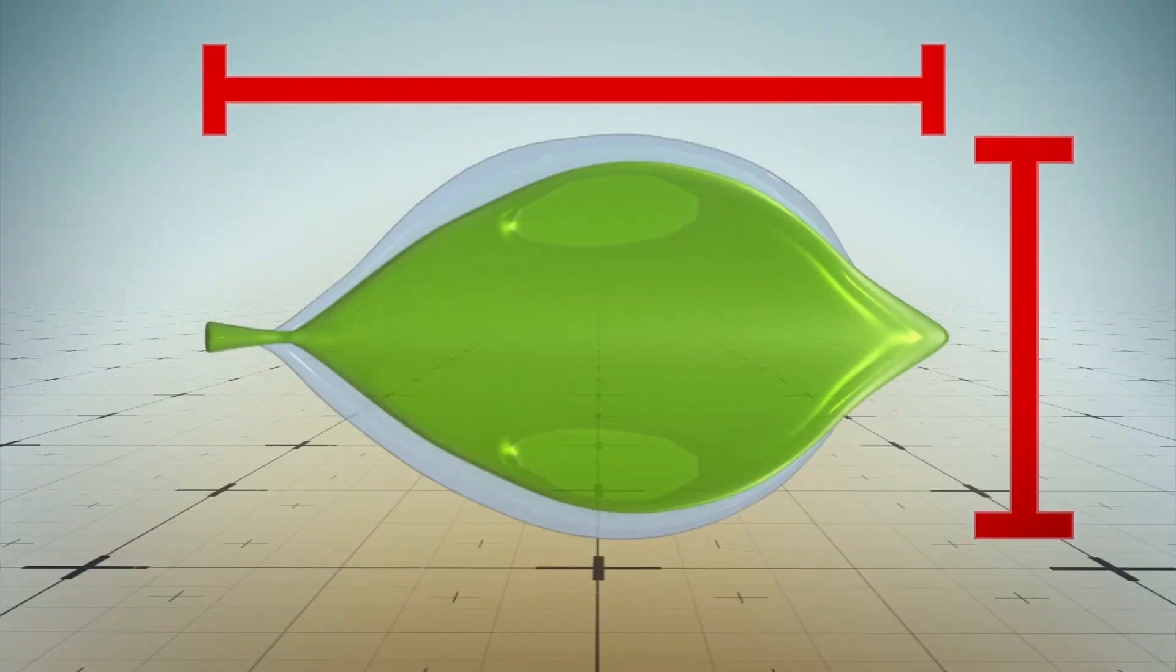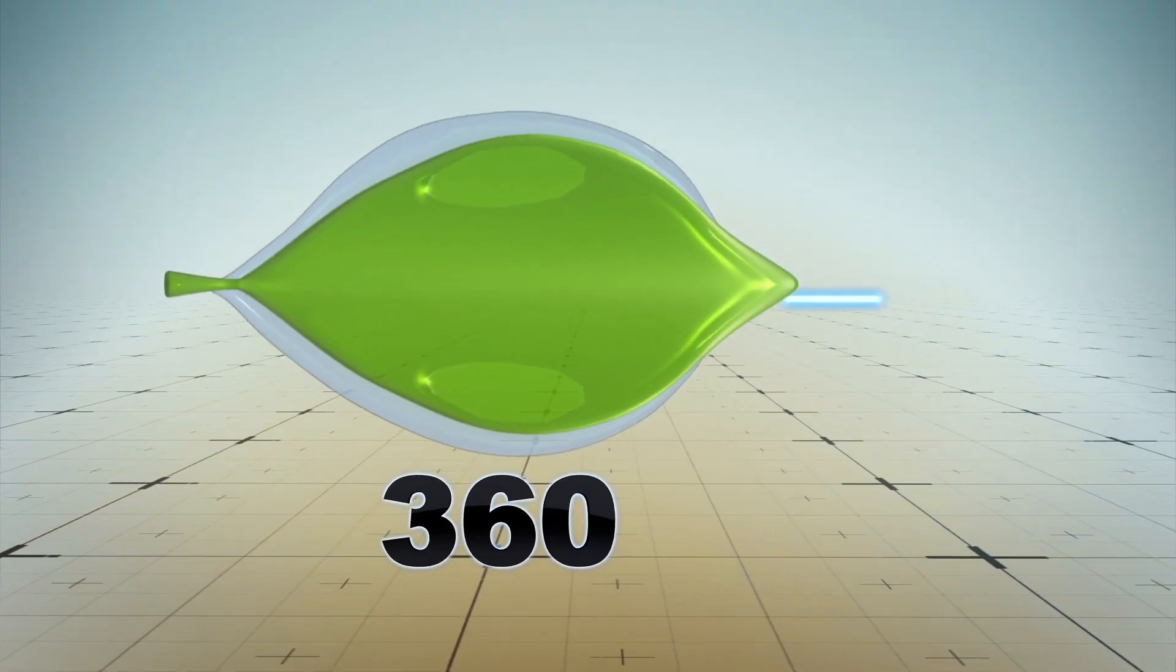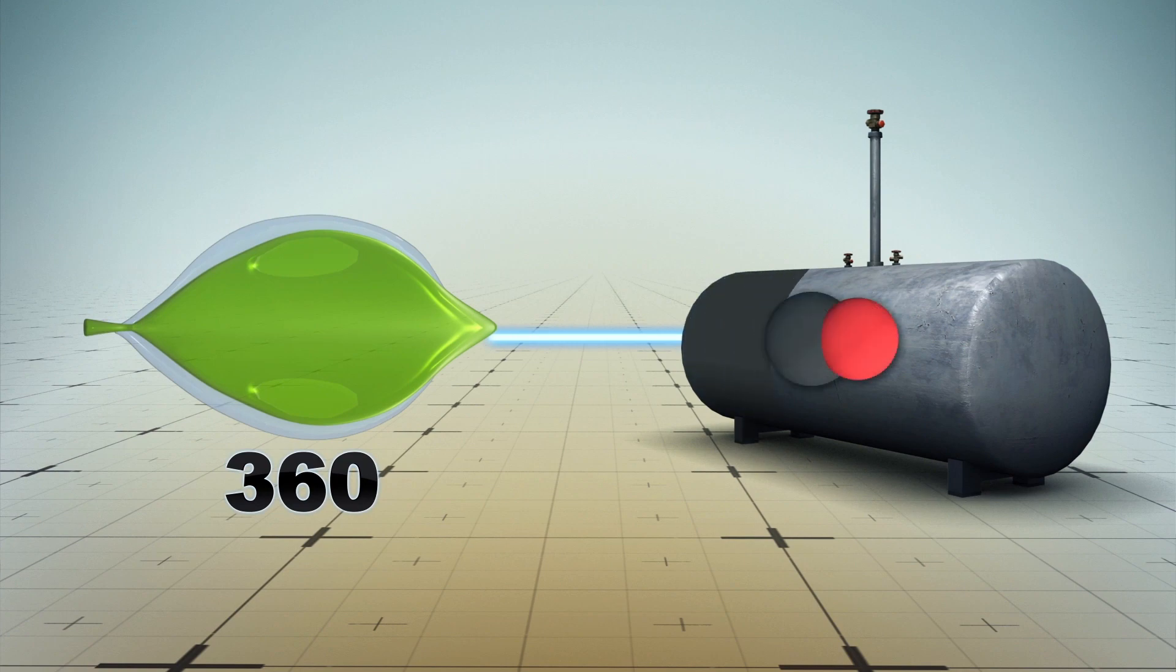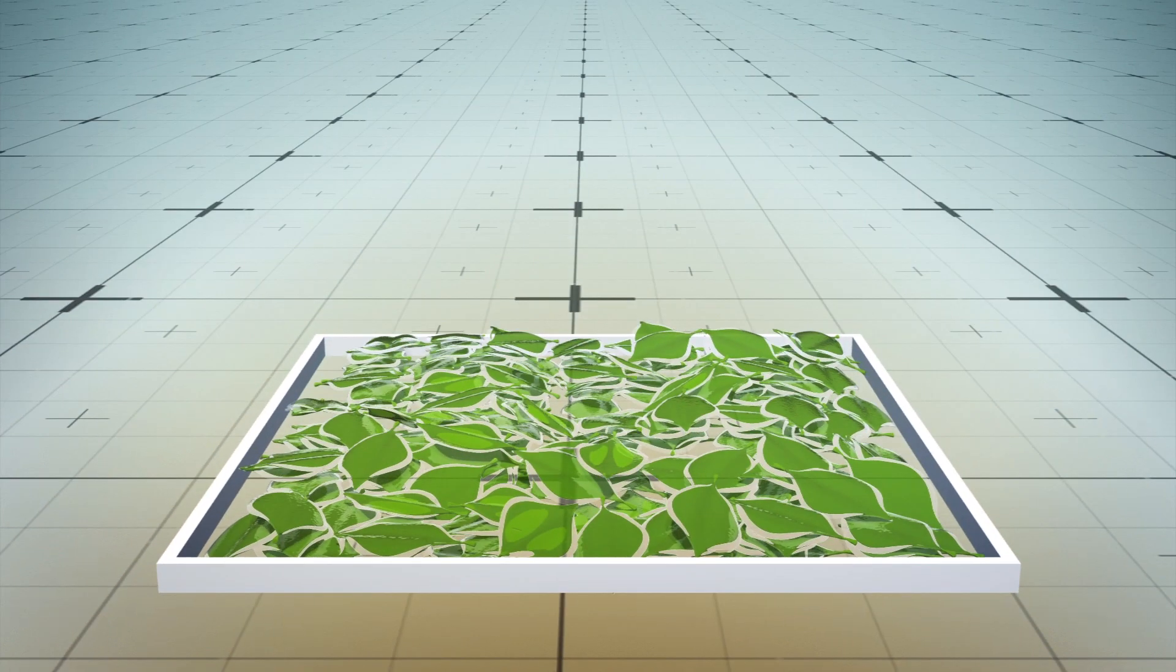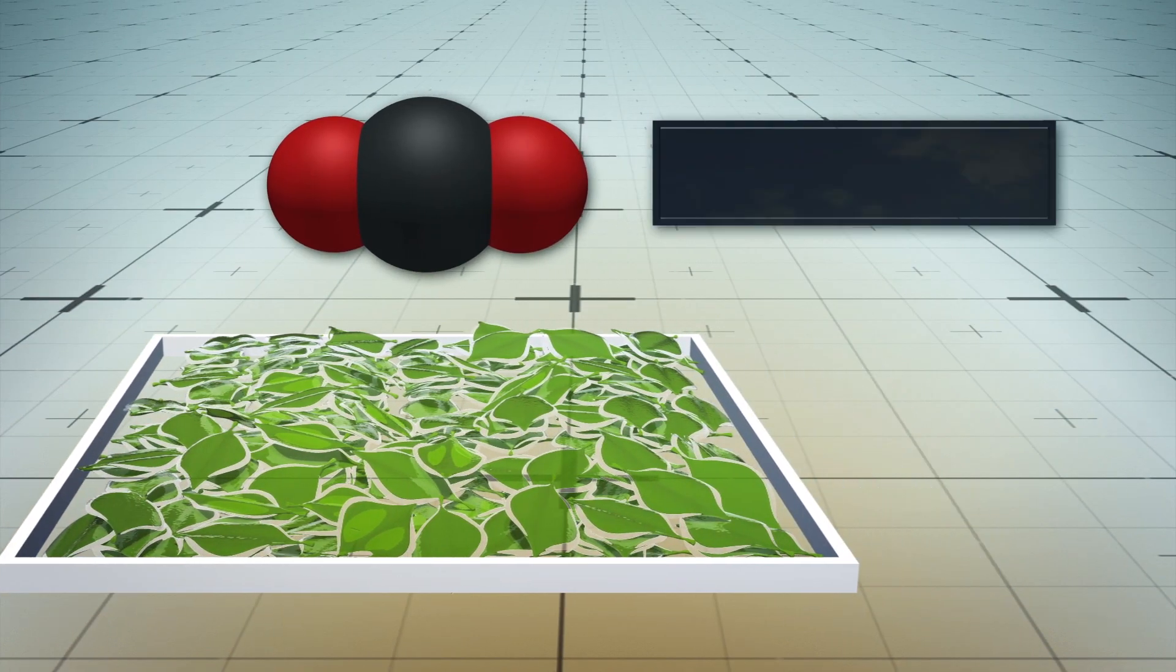The researchers calculate that 360 of the 1.7-meter-long and 0.2-meter-wide leaves could produce a half ton of carbon monoxide per day. The same number of leaves spread out in a 500-square-meter area could also reduce CO2 levels within 100 meters by 10 percent in just one day.